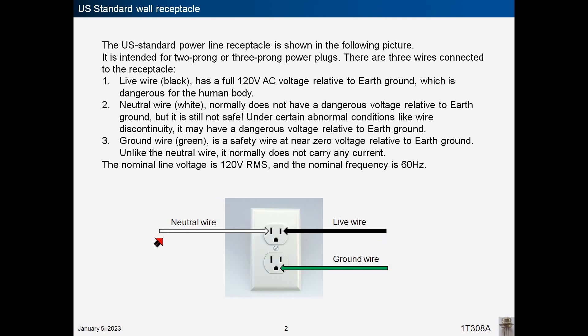The second is the white neutral wire, which normally does not have a dangerous voltage relative to earth ground, but it is still not safe. Under certain abnormal conditions, like wire discontinuity, it may have a dangerous voltage relative to earth ground.